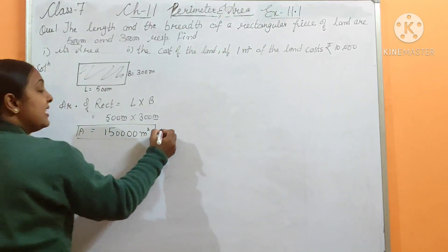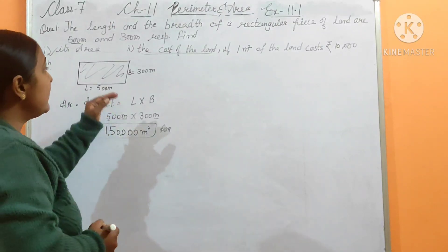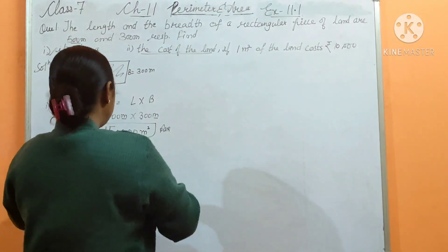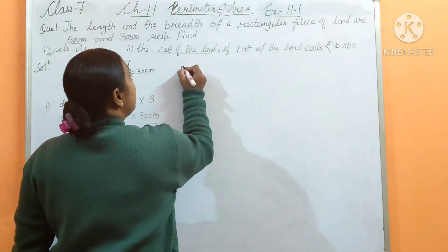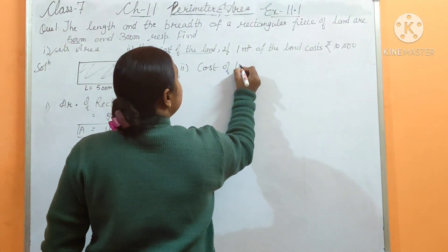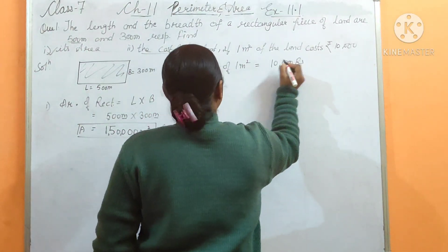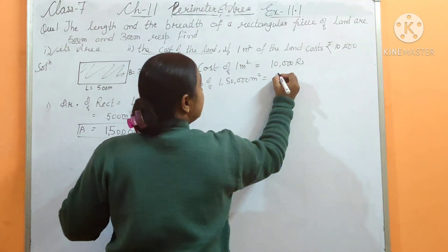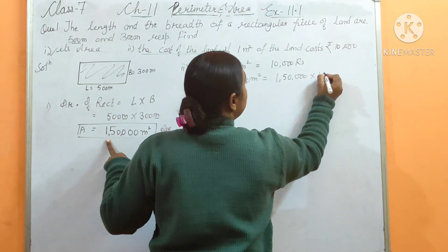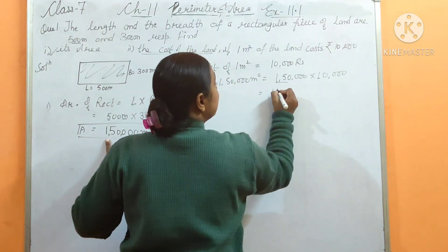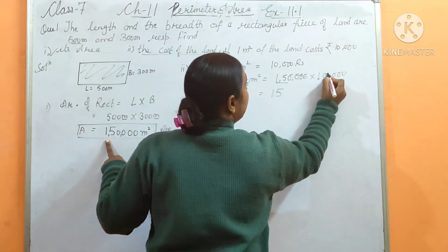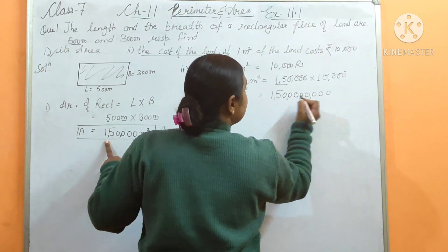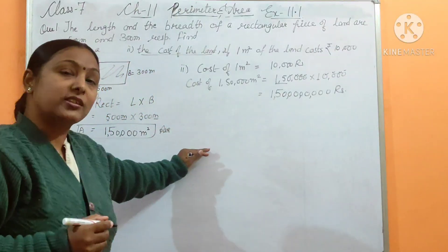So area equals 500 into 300. That gives us 150,000 meter square. This is the area of the rectangular land. Now let's move on to the second part - what is the cost of the land? The cost of 1 meter square is 10,000 rupees. So our total area is 150,000 meter square. We multiply 15 with 10,000, putting 8 zeros after 15. This is the total cost.